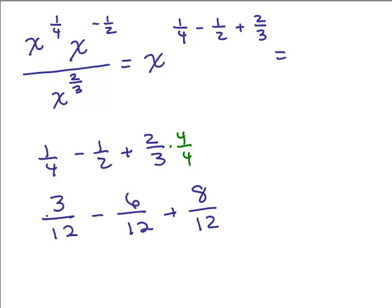Be careful of your subtraction. You're doing 3 minus 6, that's a negative 3 plus 8, so that's going to be 5 twelfths. So this is going to be x to the 5 twelfths. To be honest, most people have more trouble with adding and subtracting fractions than using the laws of exponents. So this is the correct answer.